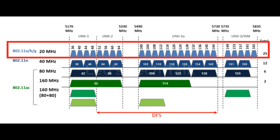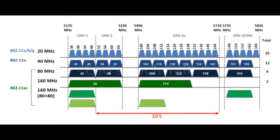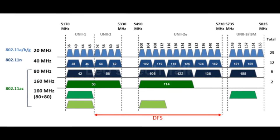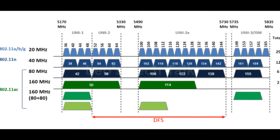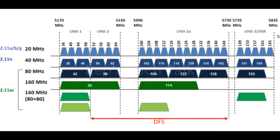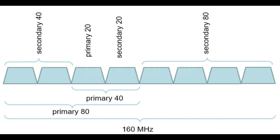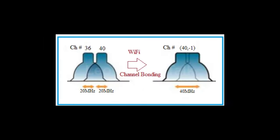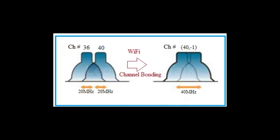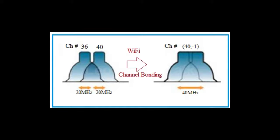Pre-802.11n clients use 20 MHz channels. In some high-density client environments with high wireless saturation, having more available 20 MHz channels to spread client usage provides better performance than having fewer 40 MHz channels. In addition, not all regulatory domains support using a 40 MHz channel. A wider channel comprises primary and secondary channels. The primary channel is used for 802.11n clients that only support 20 MHz channel bandwidth, such as legacy clients. Both primary and secondary channels can be used for clients that support wide channel capabilities — 40, 80, 160, or 320 MHz.